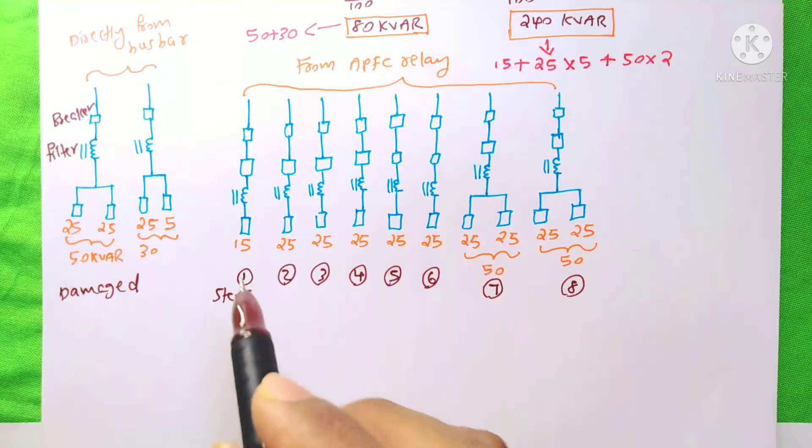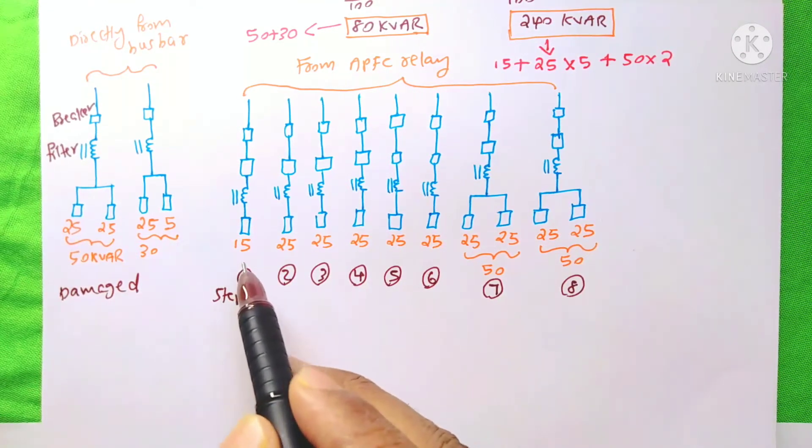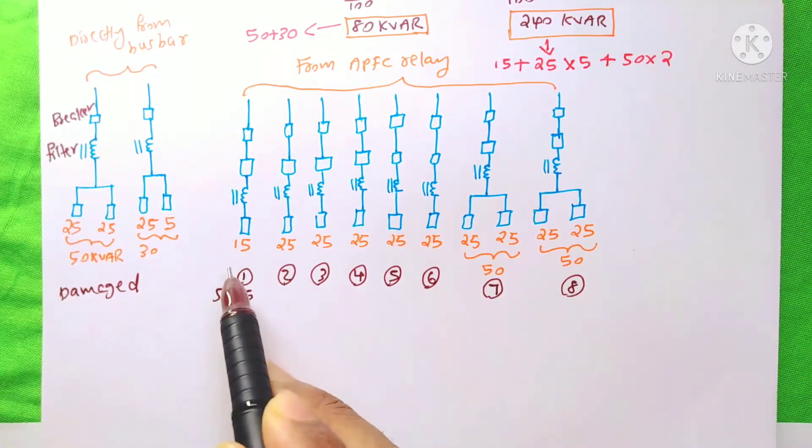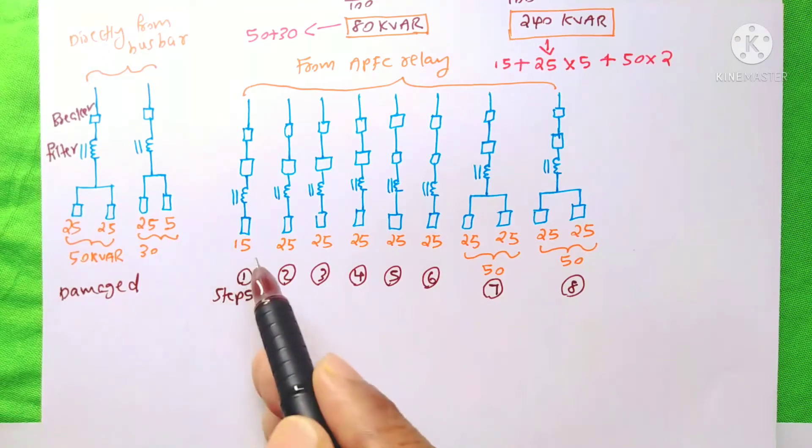The reason is, if your system needs small power factor correction requirement, then the small capacitor bank will be on suddenly.